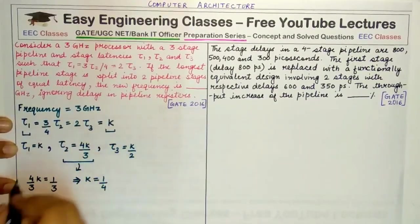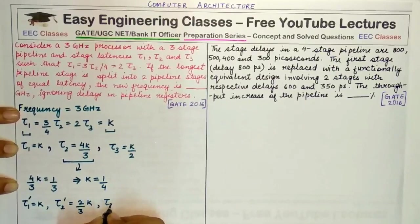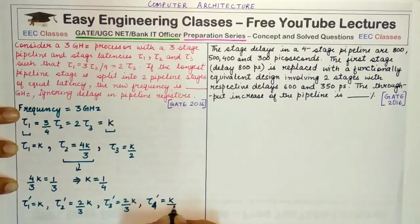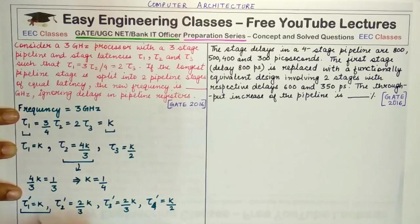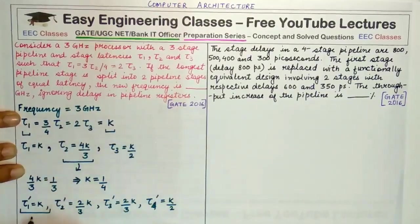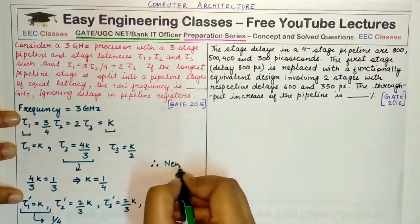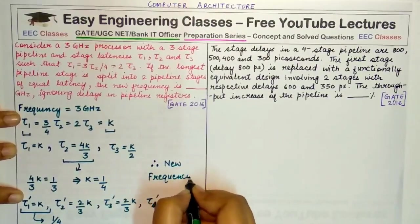Out of the new pipeline stages, the maximum is τ1' = k = 1/4. This value contributes to the frequency of the new 4-stage pipeline. Since the maximum latency is 1/4, the new frequency is the inverse, which is 4 GHz.